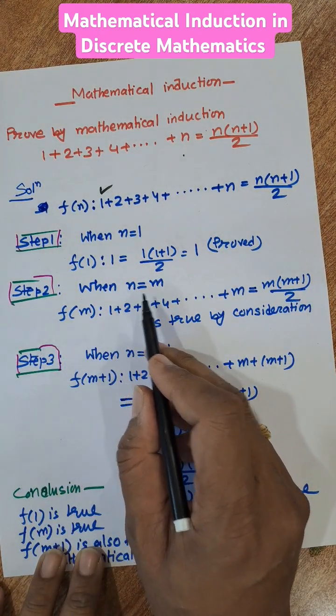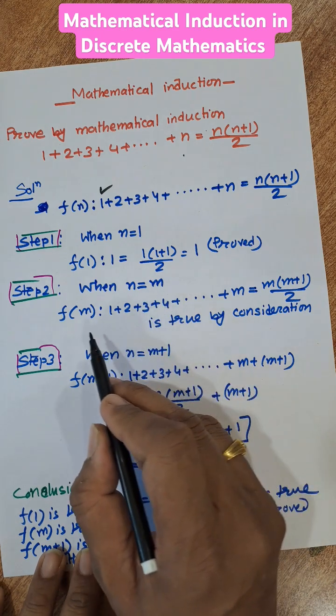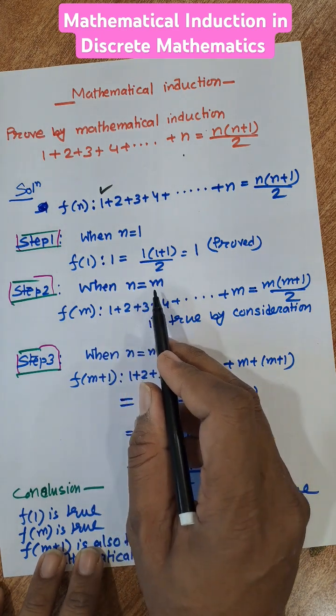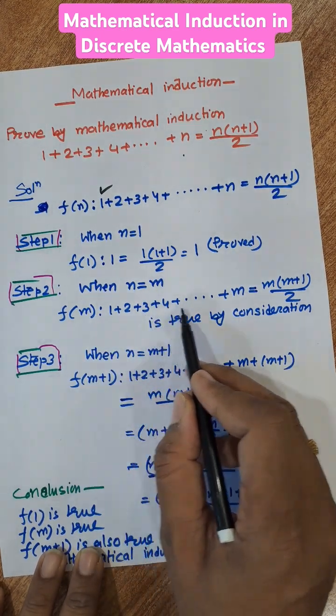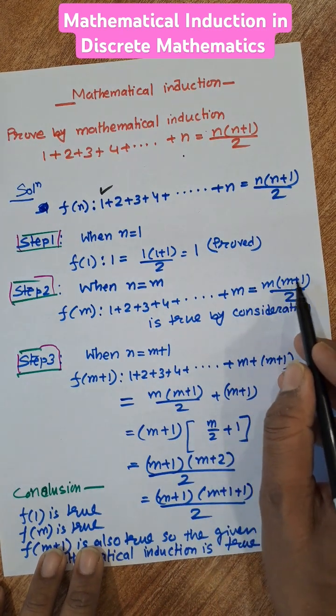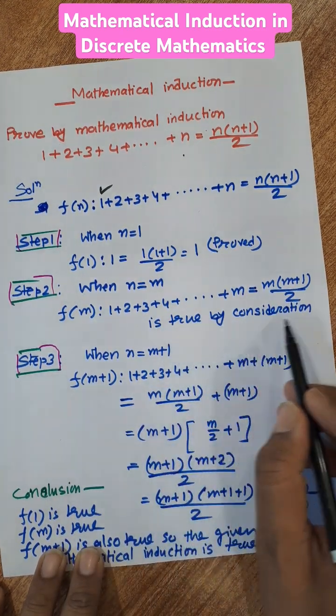Now step 2, consider n equal to m. M is any arbitrary number, so put the value of n equal to m here: 1 plus 2 plus 3 plus 4 plus dot dot dot m equal to m into m plus 1 by 2. It is true by consideration, it is proved by consideration.